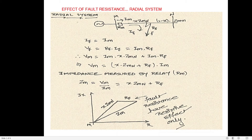In this session I am considering the effect of fault resistance on distance relay performance using two systems. First, a simple radial system for conceptual clarity. Then a more complex system involving multiple sources. We consider one source behind bus M and one at bus N. In the first simple system there is one source behind bus M, a second bus N, and a transmission line connecting them with total impedance ZMN.